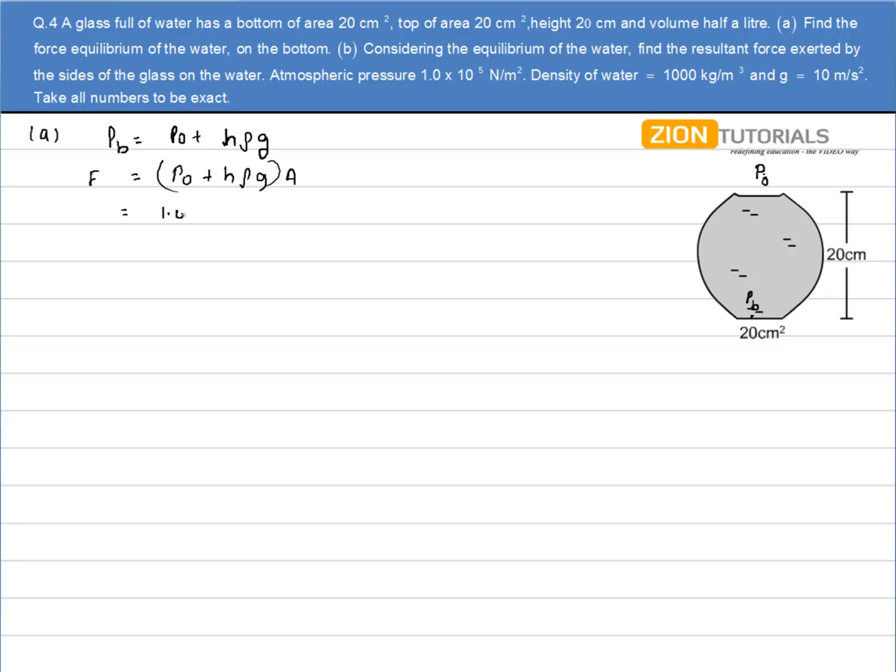Substitute the value. The pressure is P₀ = 1.0 × 10⁵, plus height is 20 cm, ρ of water is 1000, g is 10, and the area is 20 cm² so 20 × 10⁻⁴. So solve this equation, you get the value of force as 204 newtons.